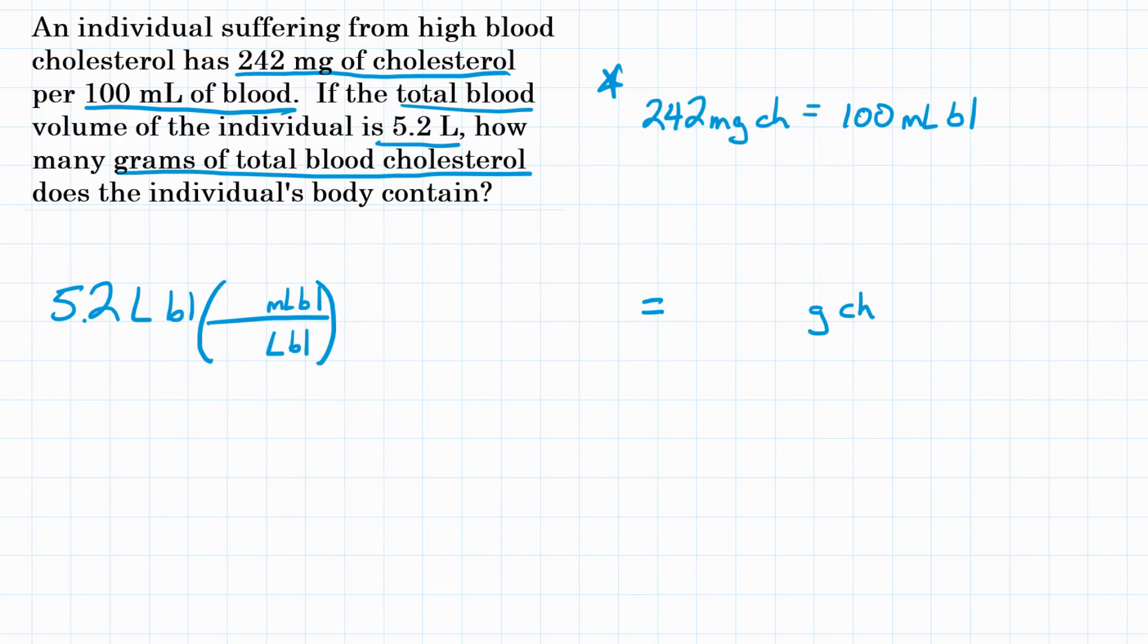And we need to know the relationship between milliliters and liters. Well, one liter is 1000 milliliters. So 1000 milliliters of blood will go on top and one liter will go on the bottom. So at this point, liters of blood will cancel out and we are at milliliters.